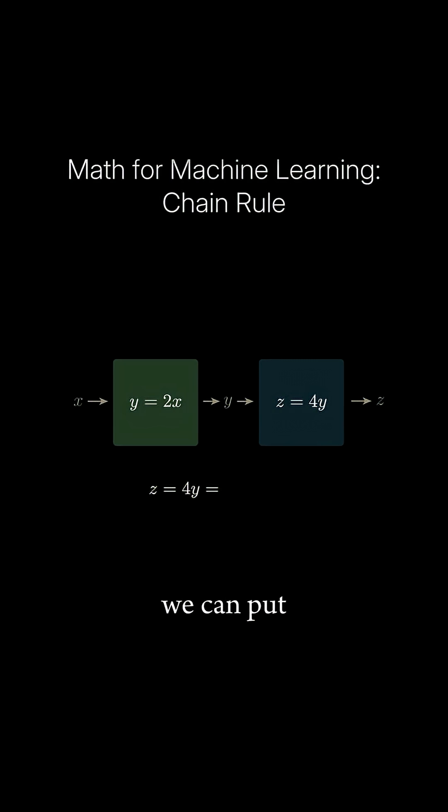As we did with our neural network, we can put our equations together by substituting y equals 2x into our second equation. Simplifying, we see that the equation for our full system is z equals 8x.